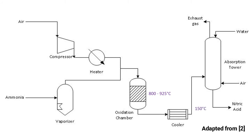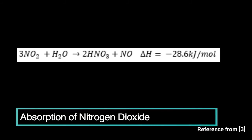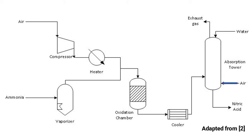After cooling to 150 degrees Celsius, the gases enter the absorption tower. At the absorption tower, nitrogen dioxide is contacted with water to form nitric acid, which is withdrawn from the bottom of the tower.